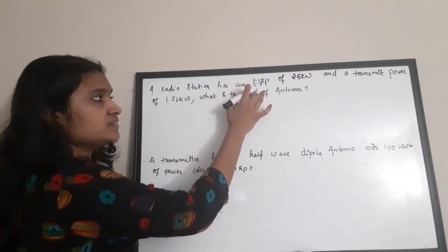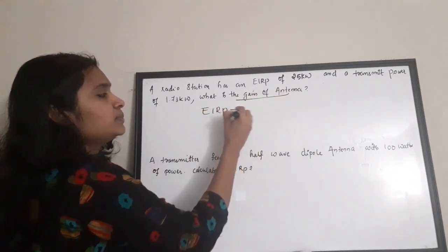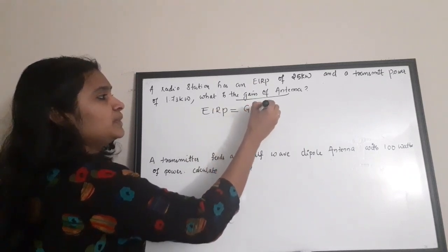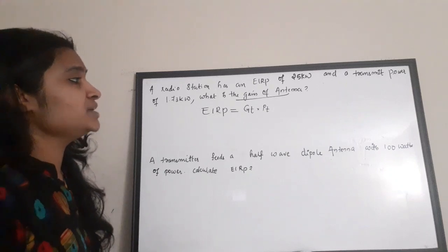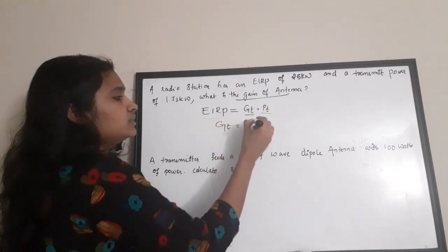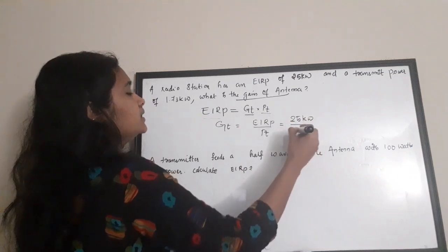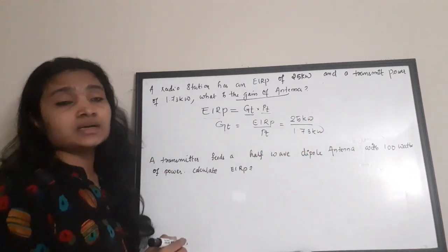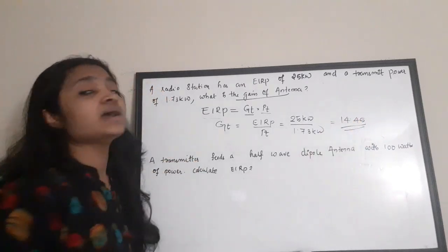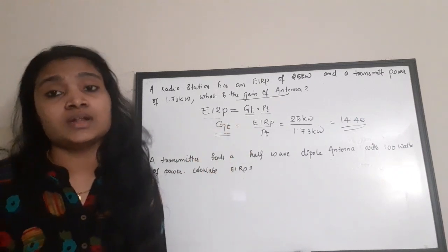The terms given are EIRP and Pt (transmitted power). The relation is: EIRP = Gt × Pt, where Gt is the transmitter antenna gain. So to find Gt: Gt = EIRP / Pt = 25 kilowatts / 1.73 kilowatts = 14.45. The gain of the antenna is 14.45 — it has no units.